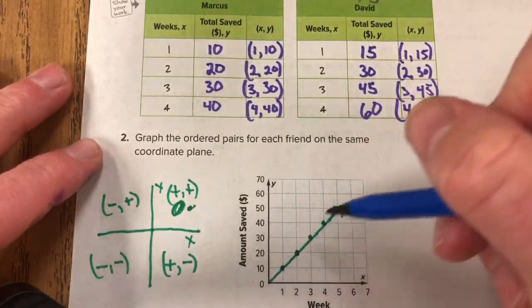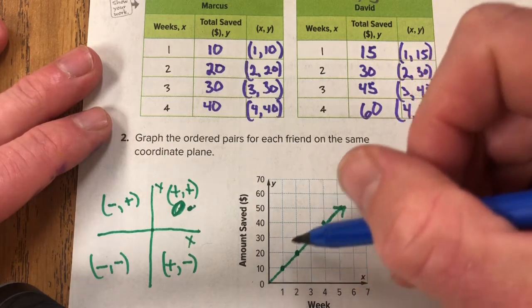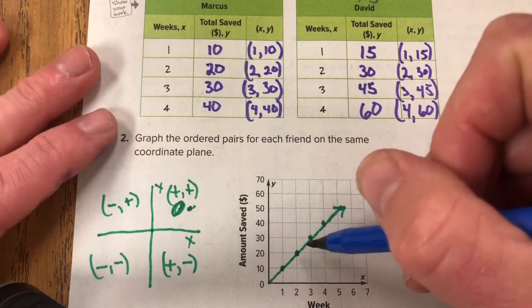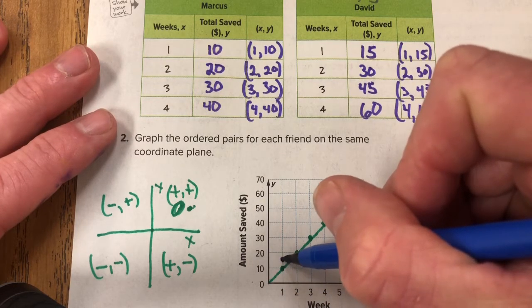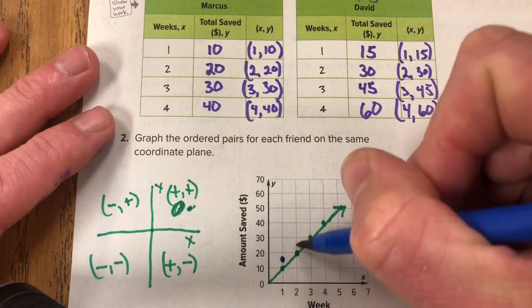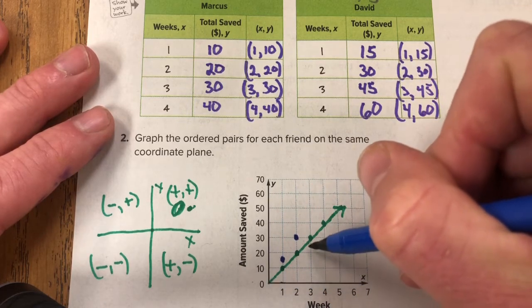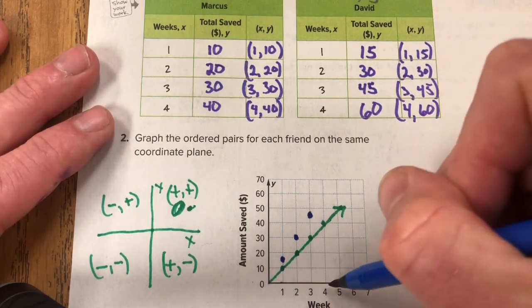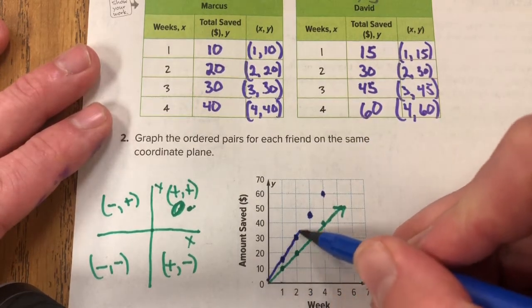All right. So that takes care of Marcus. The only thing you missed is I just connected the dots so you could see the line. Now we're going to take care of David. Now remember David's saving more per week. So we should expect this to go at a steeper rate. Also you'll notice there isn't like 15 and 45 on here. So we're going to have to kind of guesstimate or estimate where that would land. First off it's 1 15. So we're going to run one and we're going to go up to 15, which 15 we can assume is right here halfway between 10 and 20. And then it's 1 30. I'm sorry. It's 2 30. So run two up 30. And then it's 3 45. So I'm going to run three and then jump up to 45, which is right here between 40 and 50. And then finally it's going to be 4 60. So run four and jump to 60. And now I'll connect those dots the best I can with this tripod in my way.